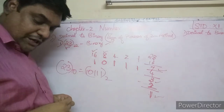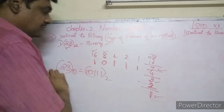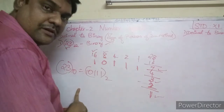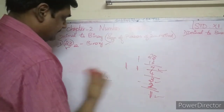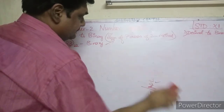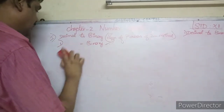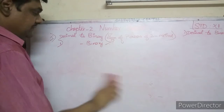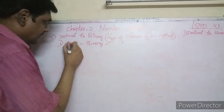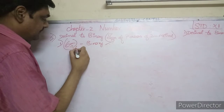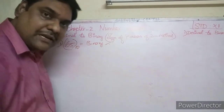So now I will show you another example to confirm the method. How about 65 base 10? Let's convert 65 base 10 to binary.